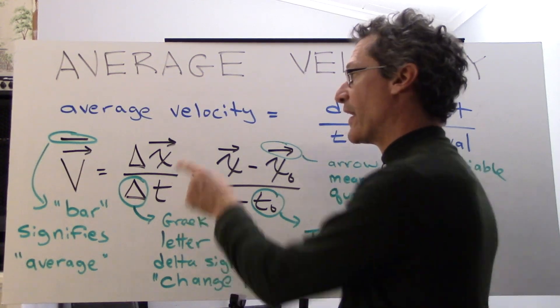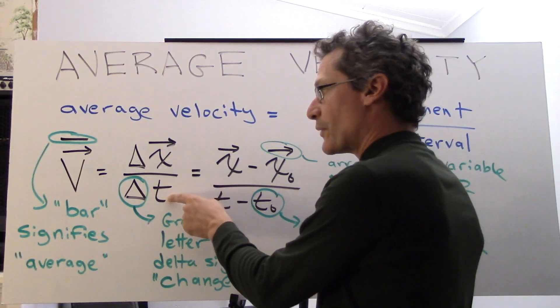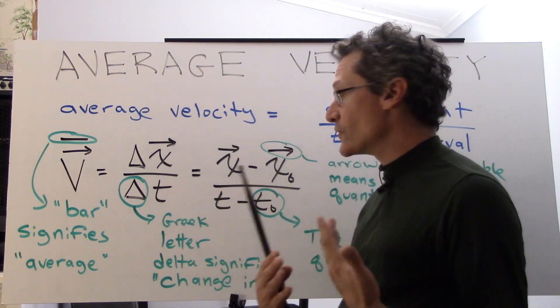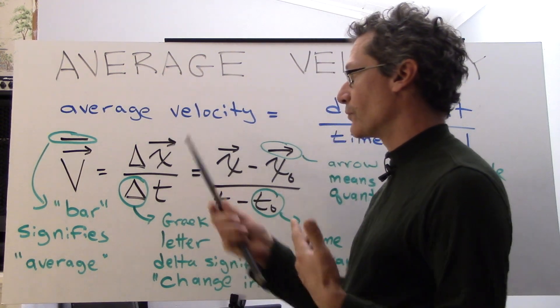So that's the added part here for velocity. We've had displacement before, now we add the element of time and this is what gives us velocity. Okay so length over time.